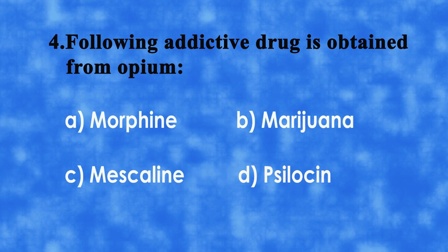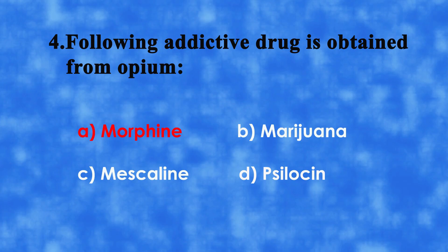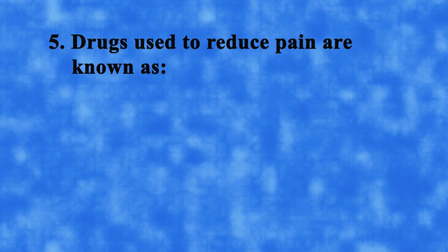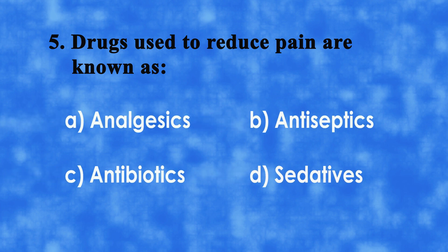No. 4: The following addictive drug is obtained from Opium. A. Morphine, B. Marijuana, C. Masculine, or D. Silosine. The correct answer is A. Morphine.